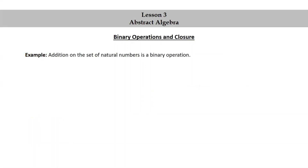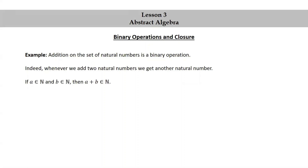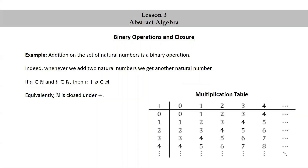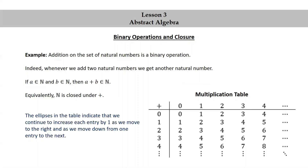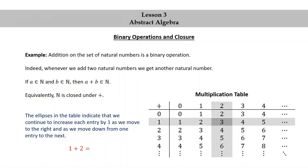Addition on the set of natural numbers is a binary operation. Whenever we add two natural numbers, we get another natural number. If A is a natural number and B is a natural number, then A plus B is a natural number. Equivalently, the set of natural numbers is closed under addition. Here is what the addition table looks like for addition on the set of natural numbers. The ellipses indicate that we continue increasing each entry by one as we move right and down. As an example, to compute 1 plus 2, we look at row 1 and column 2 and get 3.